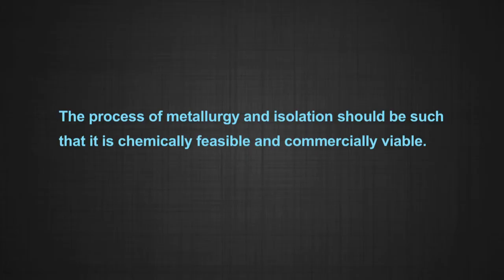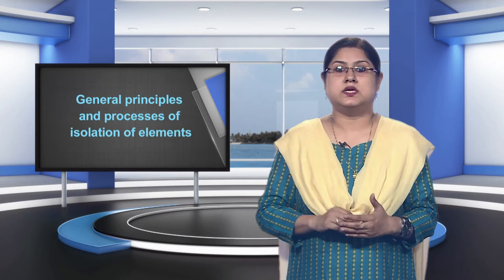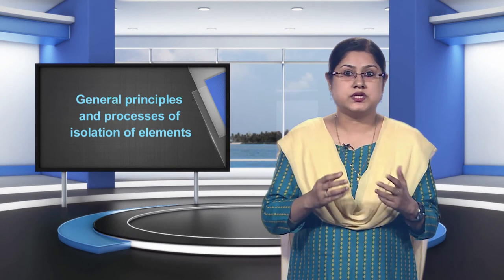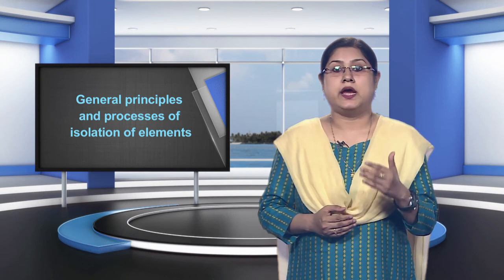A few elements like carbon, sulphur, gold and noble gases occur in free state, while others occur in combined form in the earth's crust. Out of the many minerals in which a metal may be found, only a few are viable to be used as a source of these metals. Such minerals are known as ores. The extraction and isolation of an element from its combined form involves various principles of chemistry. Some general principles are common to all the extraction processes of metals. The process of metallurgy and isolation should be such that it is chemically feasible and commercially viable. The chapter on general principles and processes of isolation of elements deals with the scientific and technological processes used for isolation of the metal from its ores.